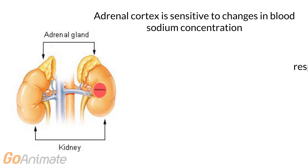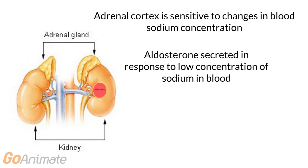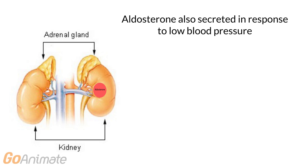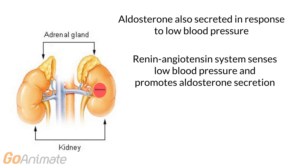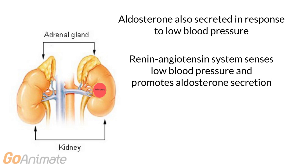The adrenal cortex secretes aldosterone in response to hormonal stimulation and by low plasma sodium. The renin-angiotensin system promotes aldosterone secretion in response to low blood pressure.